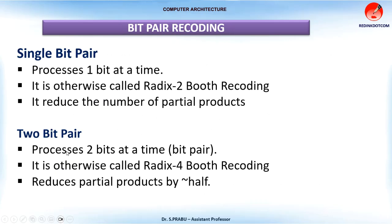Bit pair recoding can be categorized into two types. In the first one, we can process one bit at a time — this is otherwise called Radix 2 Booth recoding. In the second one, we can process two bits at a time, which is otherwise called Radix 4 Booth recoding. Let's see them one by one.